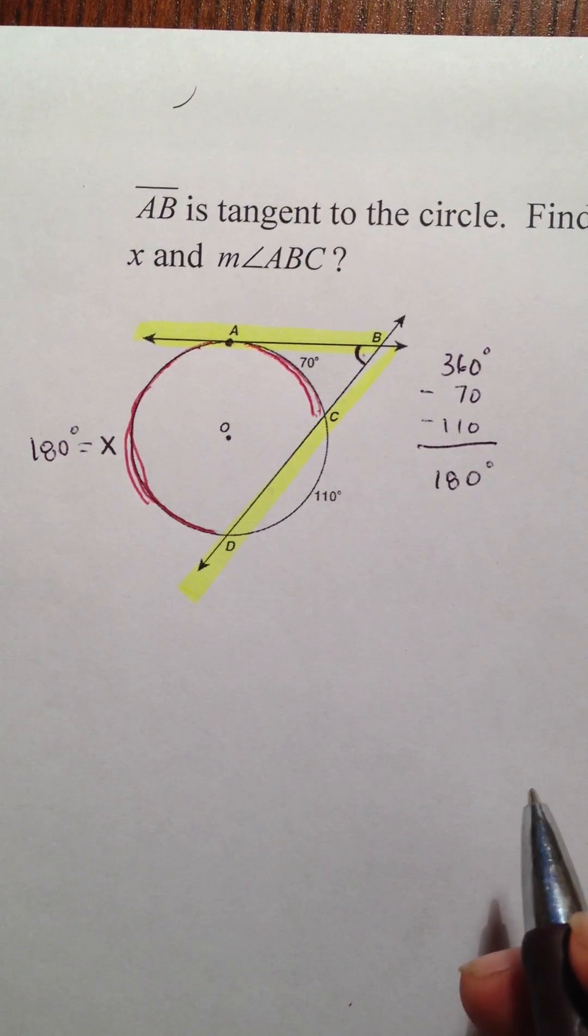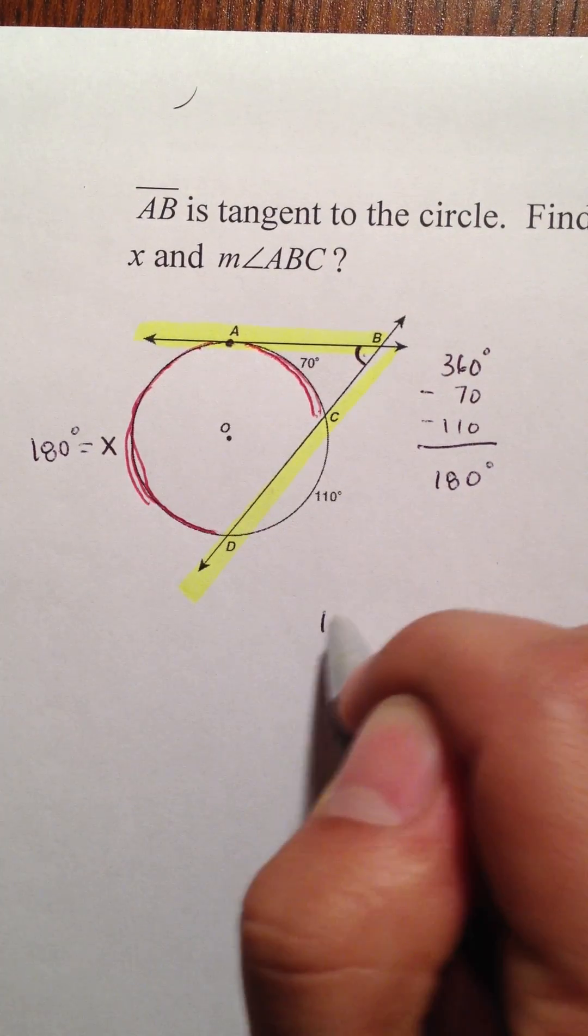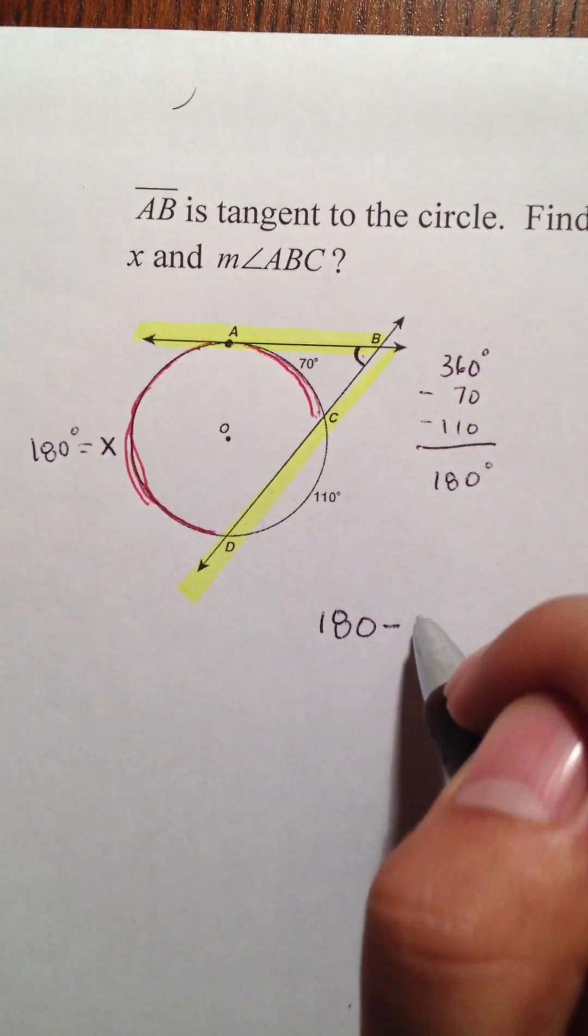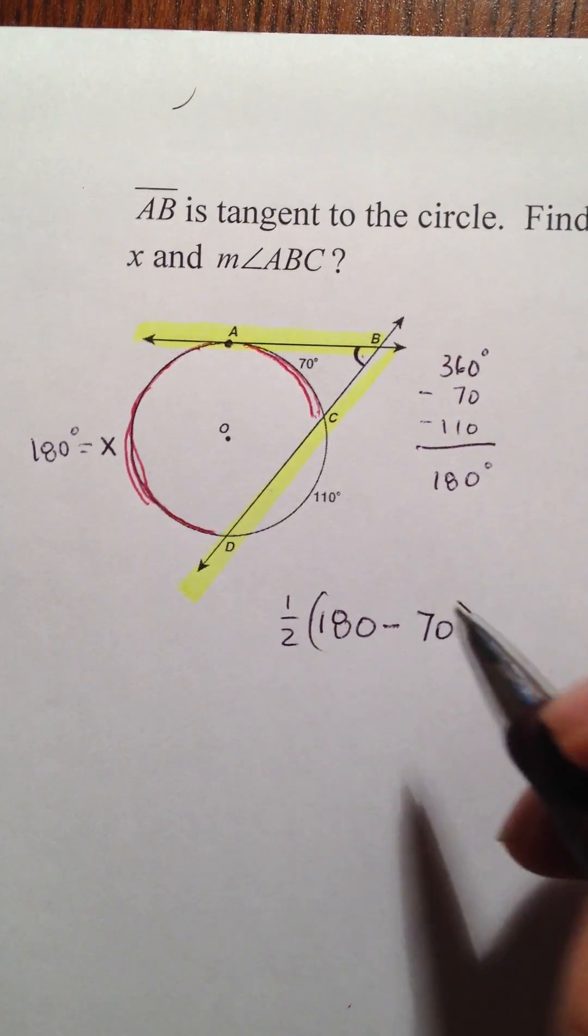The formula is this. You take the bigger arc, which is 180, subtract it by the smaller arc, which is 70, and then you need to cut that in half.